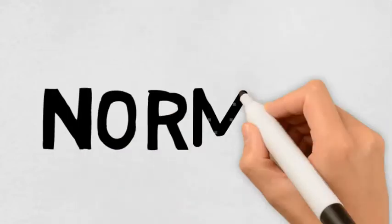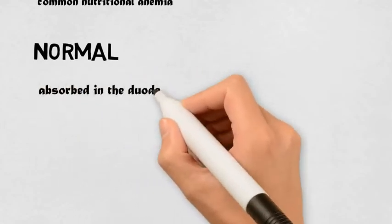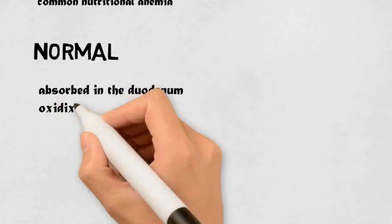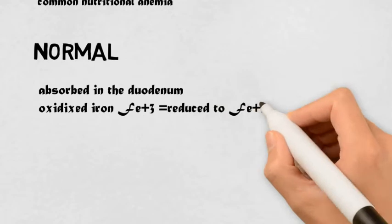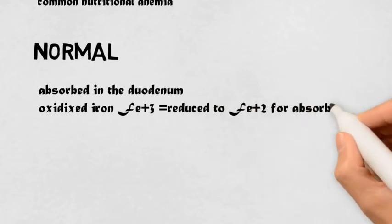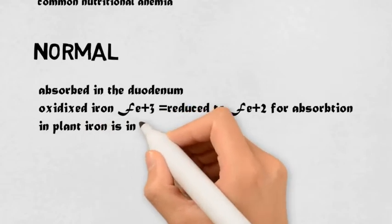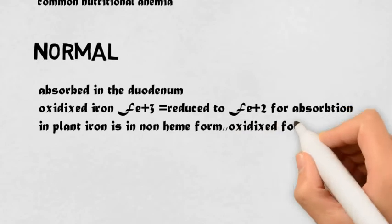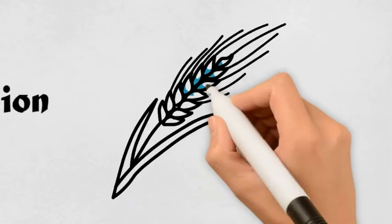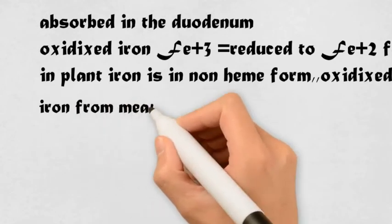Normally, iron is absorbed in the duodenum, but iron is present in two forms: oxidized form and reduced form. Oxidized form is Fe3+ and reduced form is Fe2+. In plants, iron is present in non-heme form, that is oxidized form, and in animals, iron in meat is present in heme form, that is reduced form.